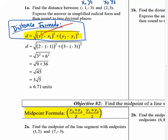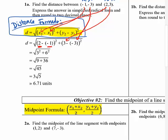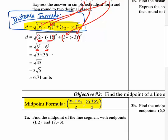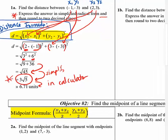x2 is 2, x1 is negative 1, y2 is 3, y1 is negative 3. Inside the first parentheses: 2 minus negative 1 makes 3, squared. In the second: 3 minus negative 3 makes 6, squared. That gives 9 and 36, which add to 45. Simplify the radical. The problem asks for simplified radical form and rounded to two decimal places, so use your calculator.